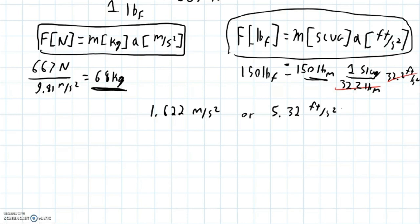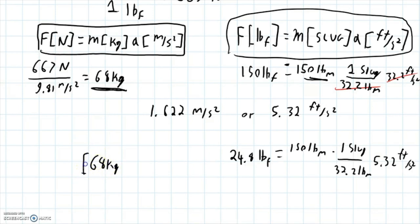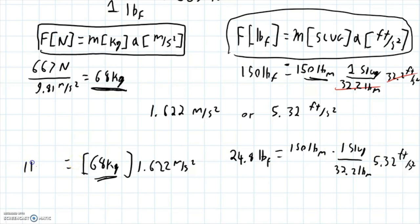We can calculate our force on the Moon either way. In imperial: 150 pounds mass times one slug per 32.2 pounds mass, times 5.32 feet per second squared, equals 24.8 pounds force. In metric: 68 kilograms times 1.622 meters per second squared — no unit conversions needed since we're already in SI base units — gives our new weight on the Moon: 110 Newtons.